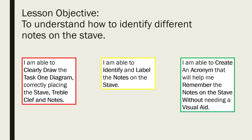Once you're able to do that, the yellow box in the middle: you are able to identify and label the notes on the stave. Then, once you're able to do that, the green box on the right: you are able to create an acronym that will help you remember the notes on the stave without needing a visual aid. A lot of the time we use those little visual aids which have the notes on the stave and tell you what the notes are — we want to get to a point where you're able to do that without needing those visual aids.